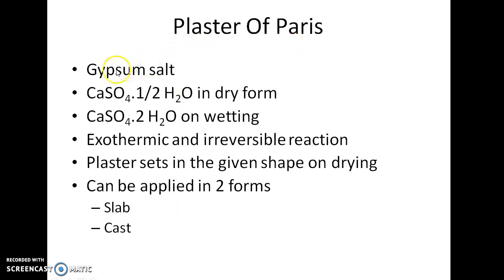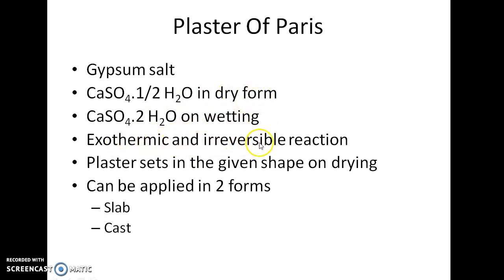What is plaster of Paris? It is also known as gypsum salt. Its formula is calcium sulfate·½H₂O in dry form and calcium sulfate·2H₂O on wetting. This process of conversion is an exothermic and irreversible reaction. Plaster sets in the given shape on drying.